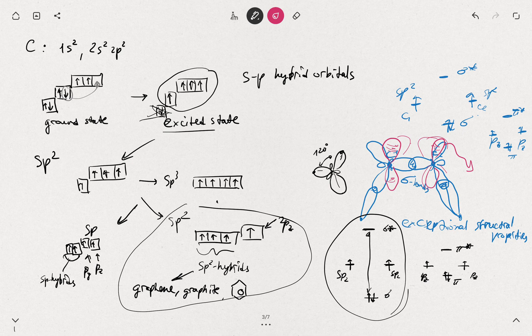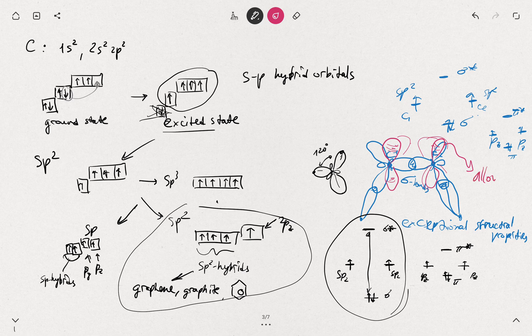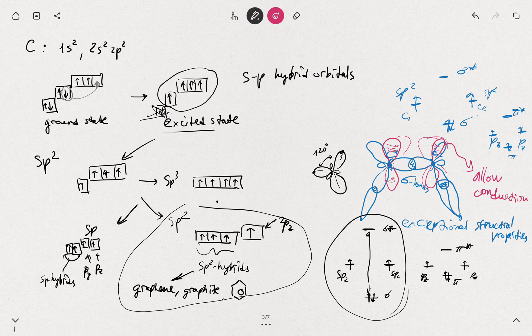Maybe you know from the chemistry course, the pi electrons in the benzene ring, they are delocalized over the entire ring. So those allow conduction. And we have one electron per one carbon atom for pi orbitals.